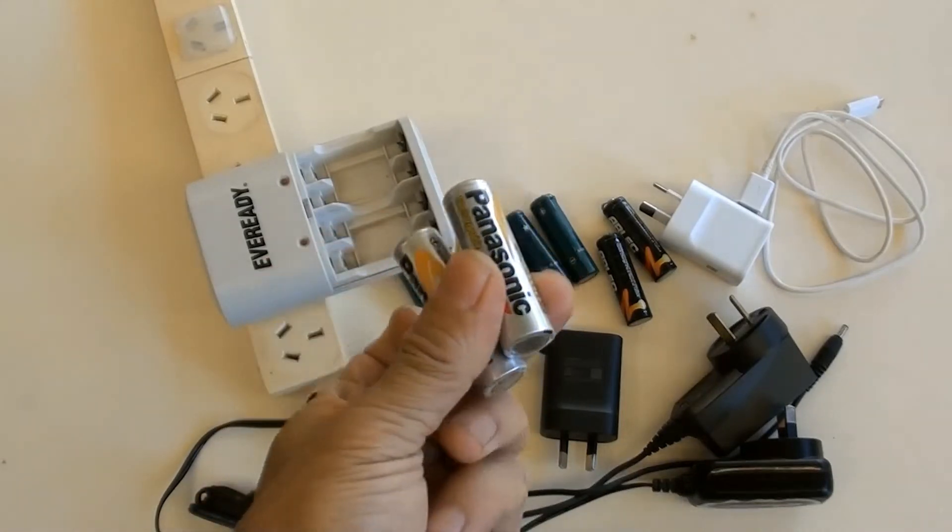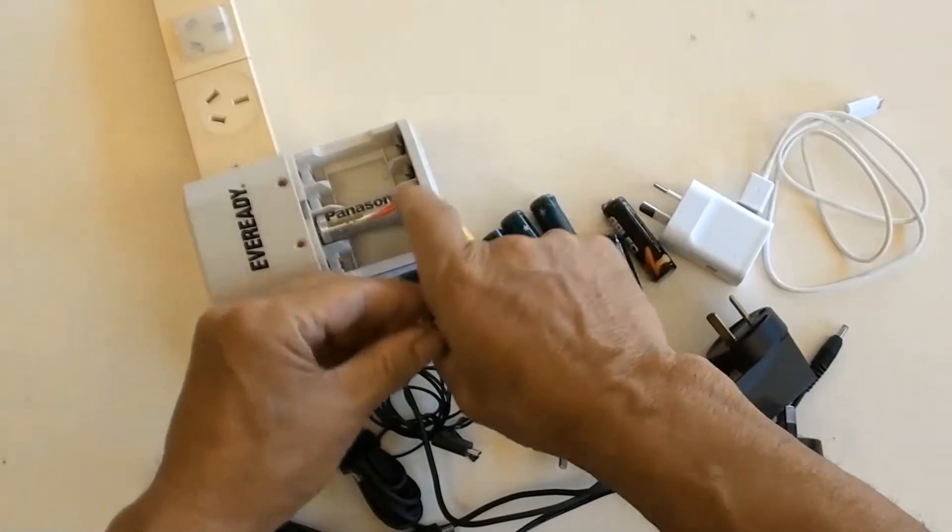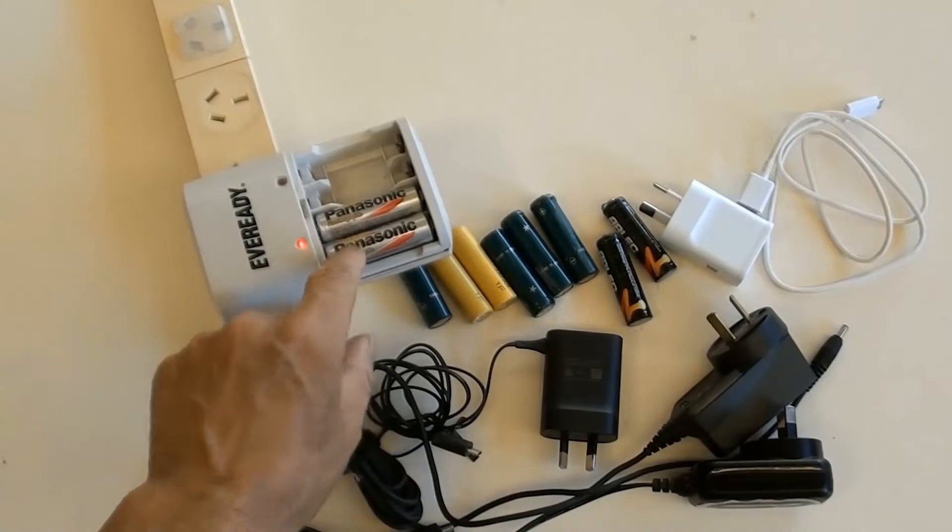These two AA rechargeable batteries are in normal condition. You can see the charger's light on when they are charged.